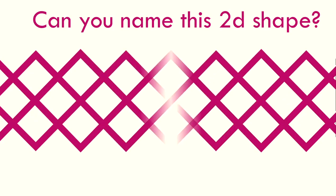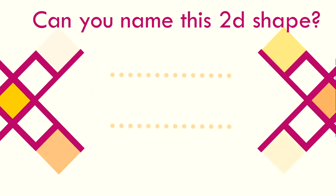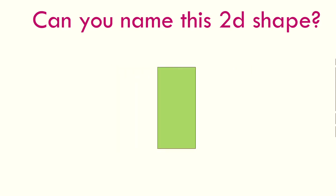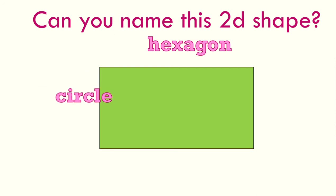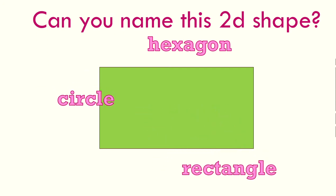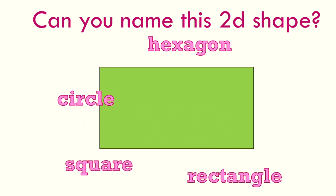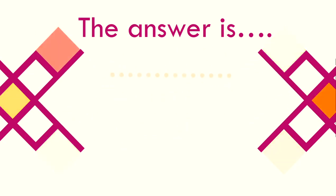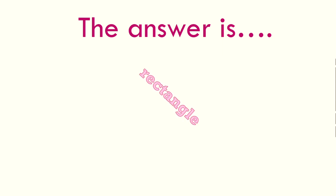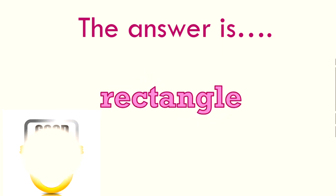Can you name this 2D shape? Is it a hexagon? A circle? A rectangle? Or a square? I think you've got it. The answer is rectangle. Well done.